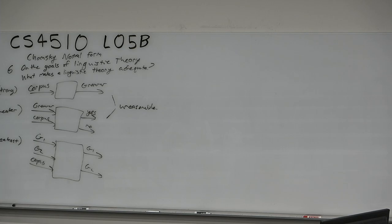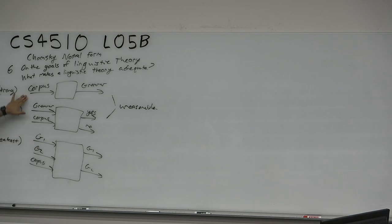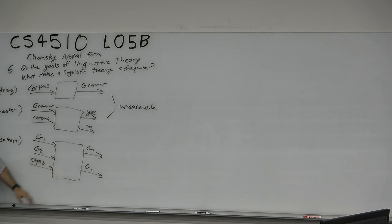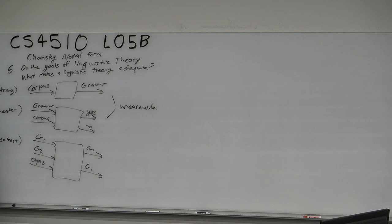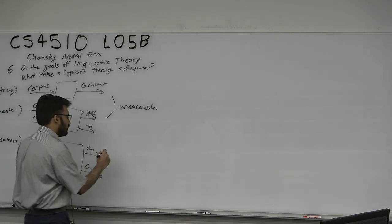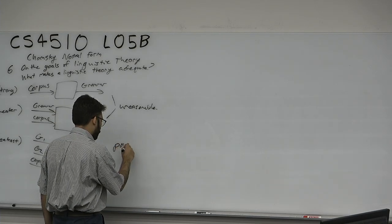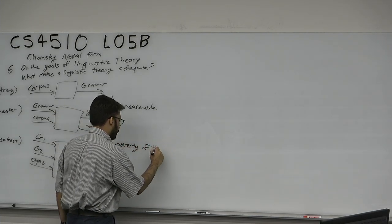Is the weaker one like a decision problem and the strong one like a search problem? Yes, exactly. Given a grammar and a corpus, the weaker is a decision problem; the strongest is a search problem. Think about a whole scientific theory — which of these is the problem we're trying to solve? He argues the two stronger ones are too strong, unreasonable, because they're trying to be perfect. The weakest is the right goal, and this is kind of the root of what Chomsky later calls the poverty of the stimulus.